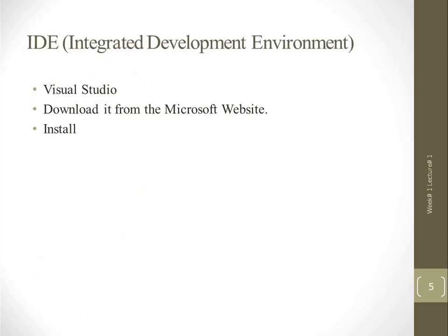For this language, you have to install the IDE — Integrated Development Environment — which is Visual Studio. You have to download it from the Microsoft website and kindly install it before my second video lecture. This is all about the introduction of the course, in which we have learned the name of the course, the course code, the outline of this course, the reference material, and a simple introduction of C-sharp language. For this language, we have to install Visual Studio.